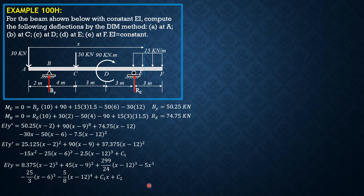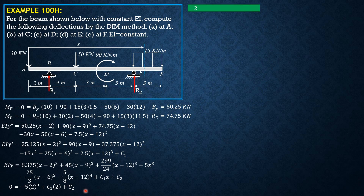We set boundary conditions. When X equals 2, Y equals 0. So: 0 equals 0 minus 5(2) cubed plus C sub 1 times 2 plus C sub 2, with all other bracket terms ignored. Setting up the first equation: 2C sub 1 plus C sub 2 equals 40.